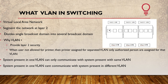For example, the Sales team is assigned VLAN 10. Port numbers 1 through 10 on the switch are assigned to VLAN 10. The HR team is assigned VLAN 20, with port numbers 11 through 16 belonging to VLAN 20. Port numbers 17 through 24 are part of VLAN 30.